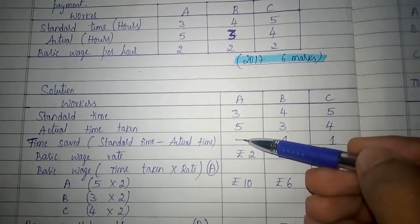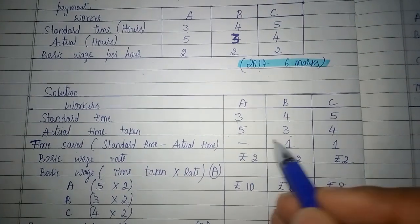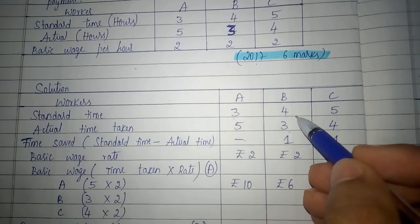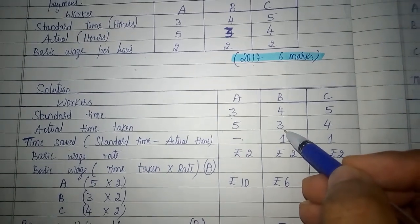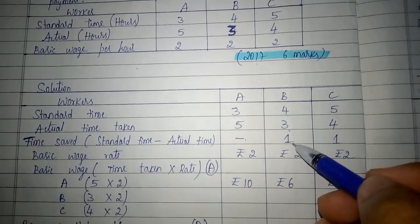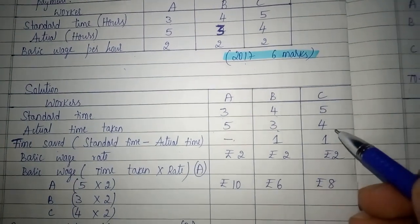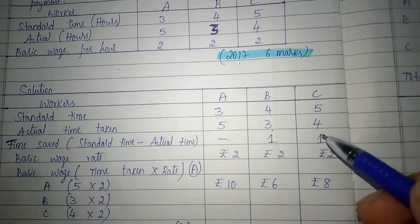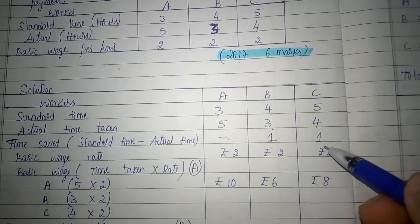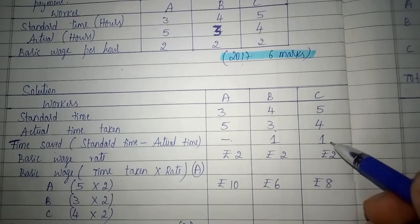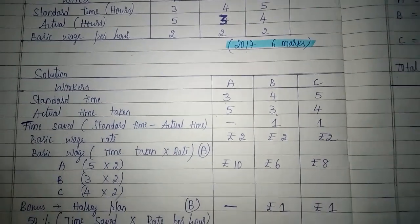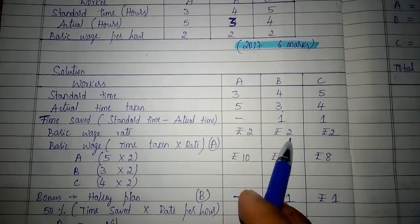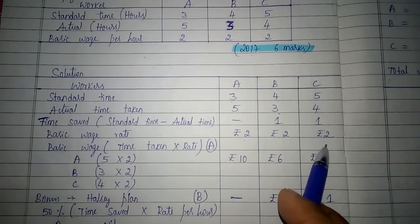Since A took more than the standard time, he has not saved any hours, so it will be nil. In the case of B, standard time given was four hours and he has taken three hours to complete the work, so he has saved one hour. In the case of C, standard time given was five hours and he has taken four hours to complete the work, so he has saved one hour. The basic wage rate given in the problem is rupees 2 for A, rupees 2 for B, and rupees 2 for C.